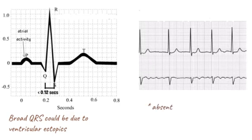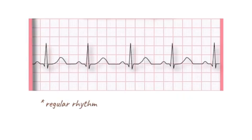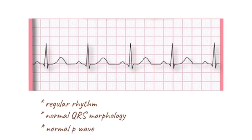If there are no P waves present and the baseline is irregular with a regular RR interval, this is suggestive of atrial fibrillation. If the rhythm is regular, the QRS duration and morphology is normal, and there is a P wave present before each QRS complex, then normal sinus rhythm is said to be present.